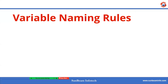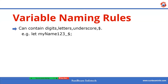There are some variable naming rules that we have to follow while declaring a variable. First rule: our variable name can contain letters, digits, underscore, and dollar sign. For example, I am declaring my variable name as 'myname_123$', which is valid in JavaScript.